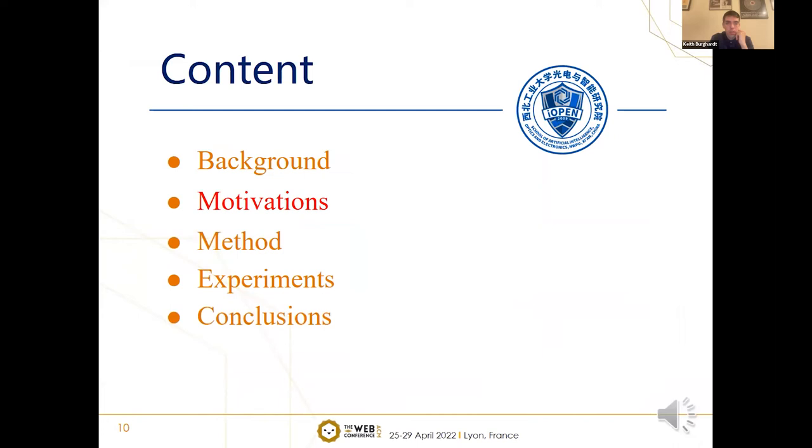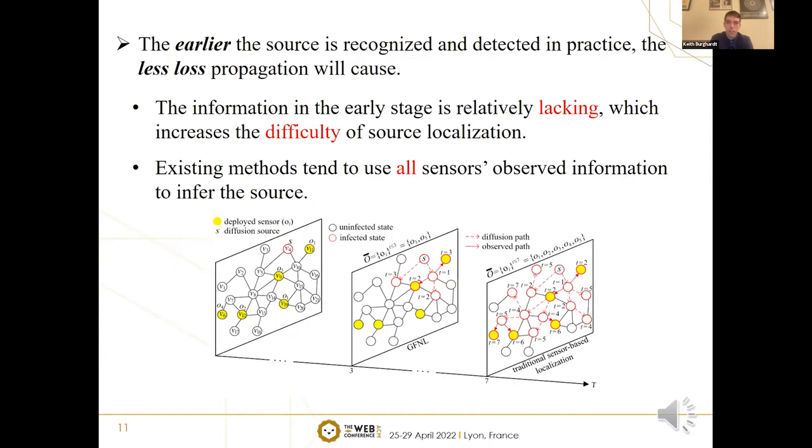Next, I will introduce the research motivations of our work. The premise of existing methods to achieve satisfactory prediction accuracy is that all deployed sensors contribute to the observed information when inferring the source, which cannot restrain the propagation in time. In reality, the earlier the source is recognized and detected in practice, the less loss propagation will cause, but the information in the early stage is relatively lacking, which increases the difficulty of source-localization.